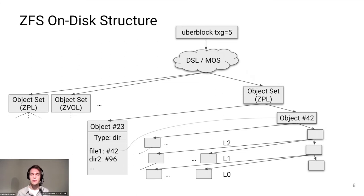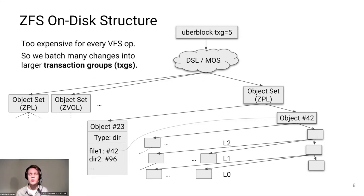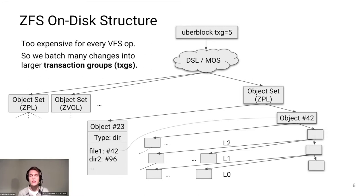This is quite elegant on its own, but we can't afford to do this for every single VFS operation — it would be prohibitively expensive both in terms of CPU time and write amplification. The solution ZFS takes is to batch the changes of many VFS operations into transaction groups, amortizing the cost of the full bottom-up update.